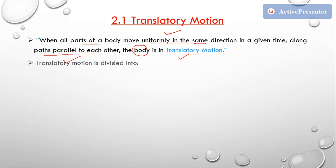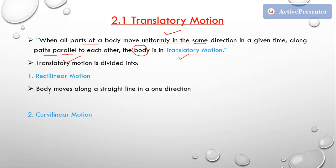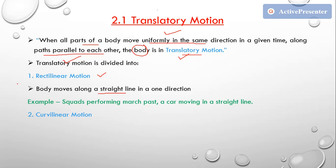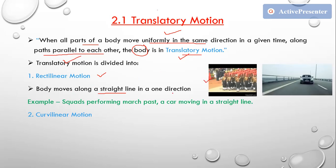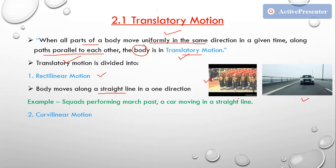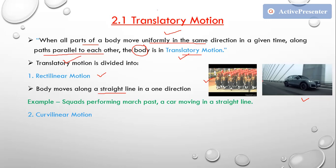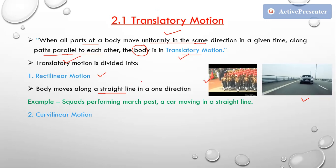Translatory motion is further divided into two categories: rectilinear motion and curvilinear motion. Rectilinear motion means when a body moves along a straight line in one direction. Examples include squads performing a march-past and a car moving in a straight line. In rectilinear motion, the object moves in a straight line in a single direction.